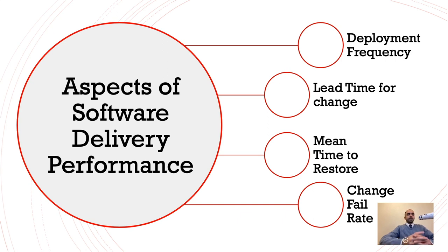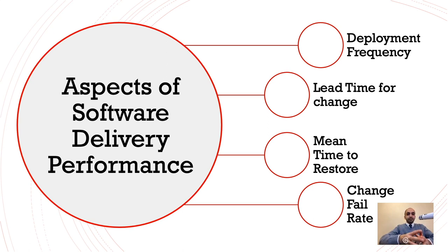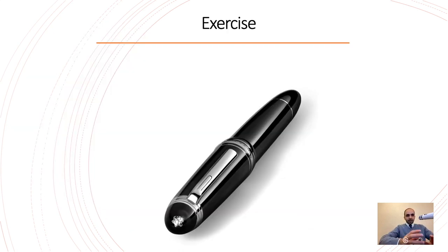The four key measures of software delivery performance are: frequency of deployments, lead time to change, mean time to restore, and change fail rate. We will talk about each one. This video also includes a simple exercise — grab your pen, and every time we calculate the ROI of a specific practice, write it down. At the end, we will sum them together to find out how much we can save or generate as value for our company.